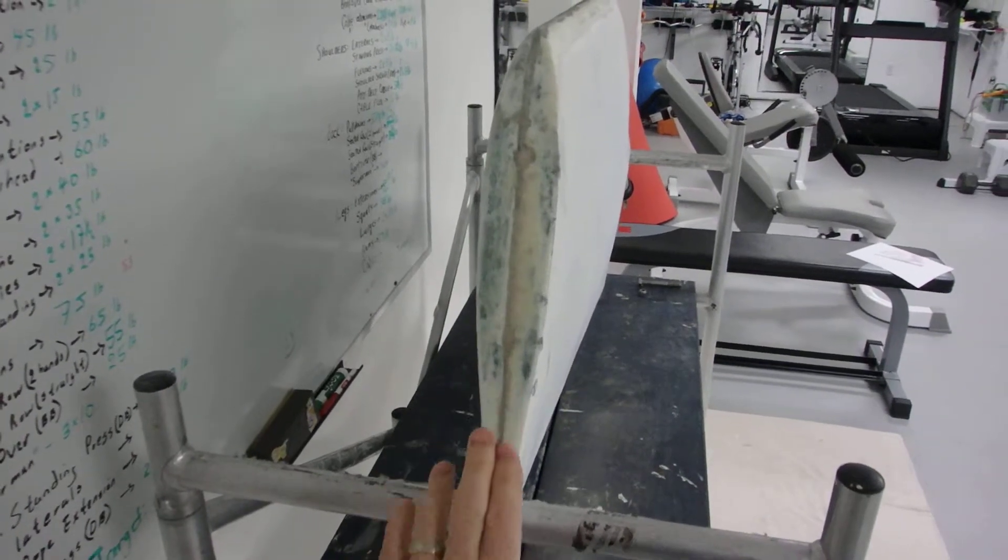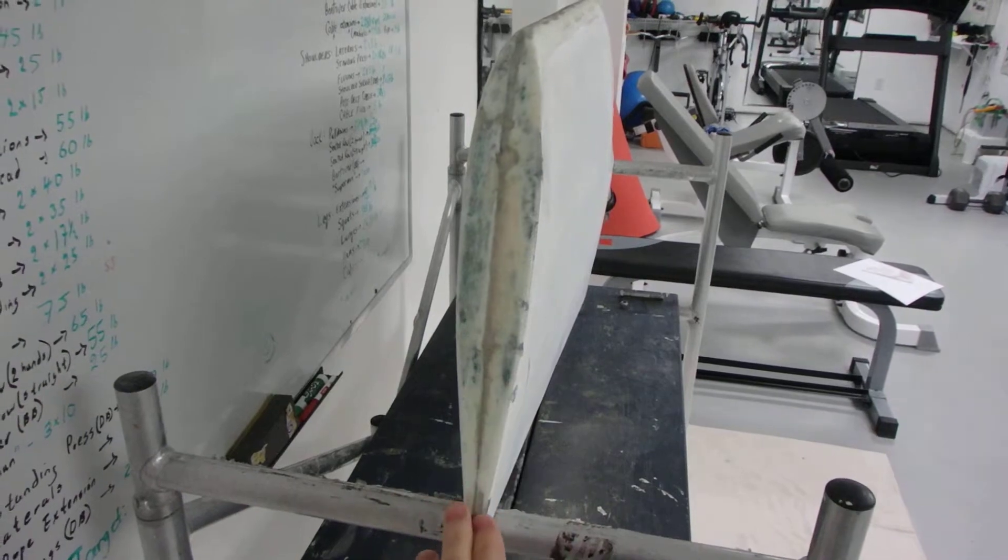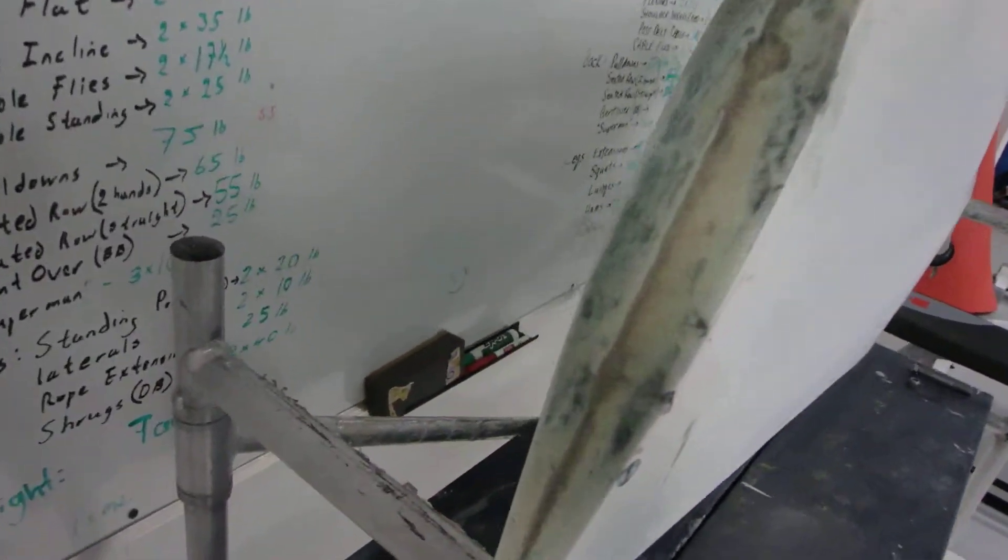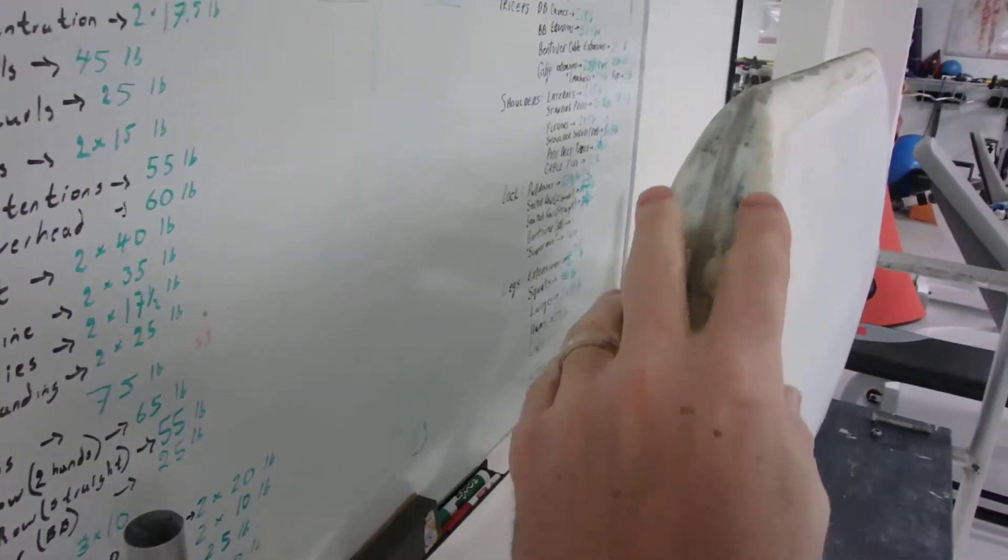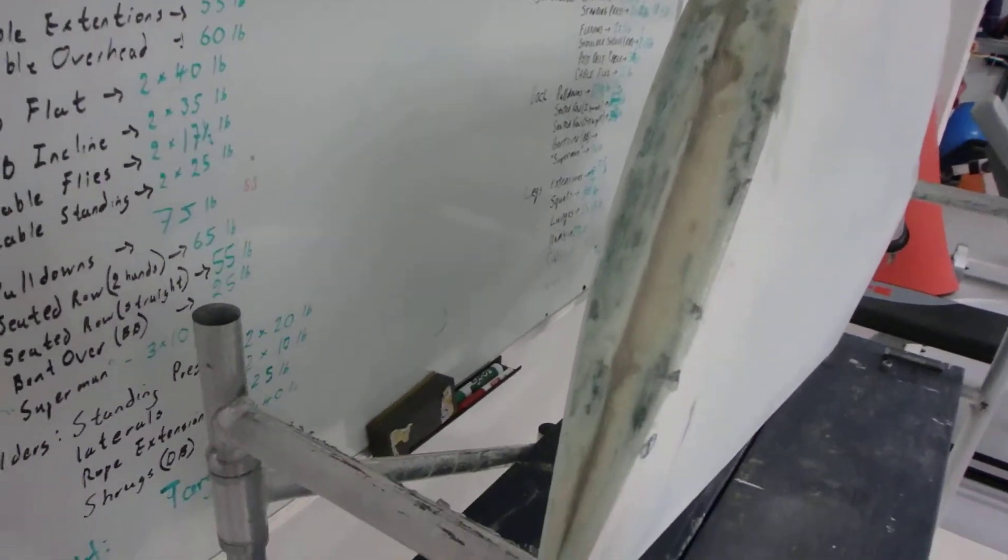Then I went ahead and mixed up an unthickened epoxy West Systems and put on some fiberglass, some medium weight fiberglass. I don't know if you can see the discolorations underneath there. Some of the old paint didn't come off that was sanded well and cleaned, but didn't come off.